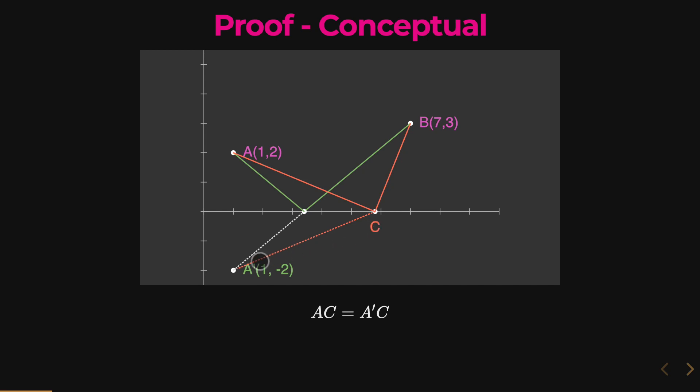So AC is equal to A' to c, and AC plus BC is greater than or equal to A' to B. So we know that our shortest distance is definitely A' to B.